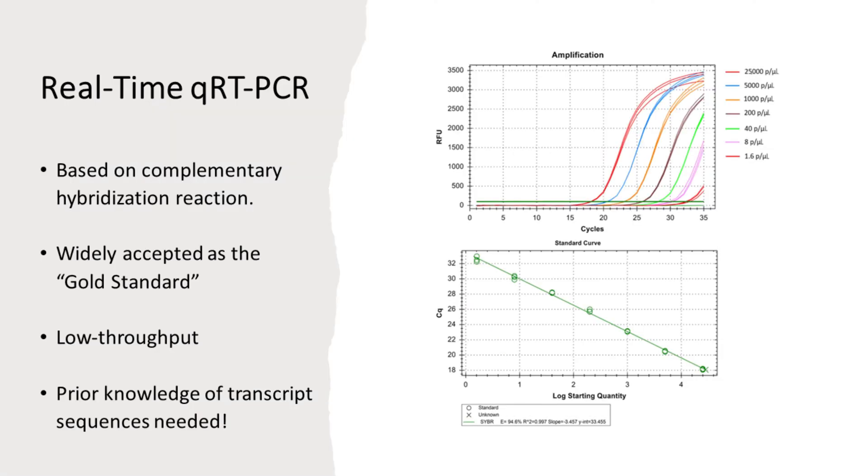We can quantitate the initial transcript template by real-time detection of the fluorescence signal emitted in each cycle of the classical PCR. This is the so-called real-time quantitative reverse transcription PCR or real-time qRT-PCR.